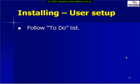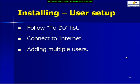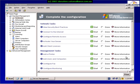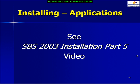We need to follow the to-do list, which is brought up upon the final reboot. The first thing we need to do is connect to the internet, add our users, add our computers, and any additional applications. The to-do list is part of the Server Management Console, and it's recommended that we follow through these procedures in the order that they are presented. For more information, please see our SBS 2003 Installation Part 5 video, which focuses on using the Connect to the Internet Wizard.